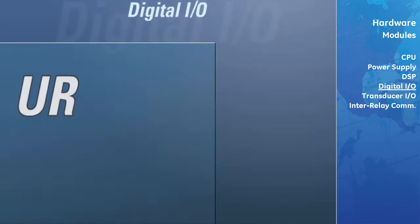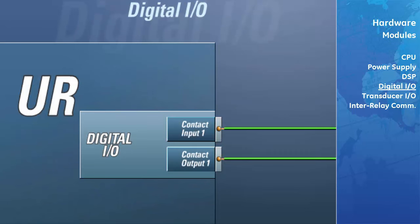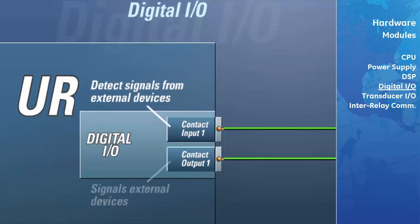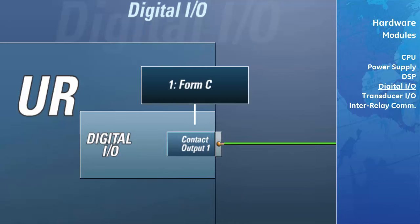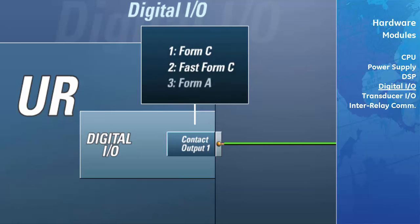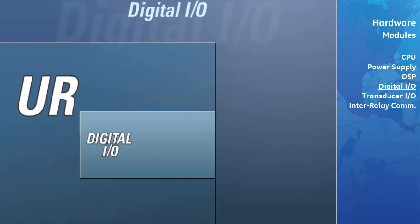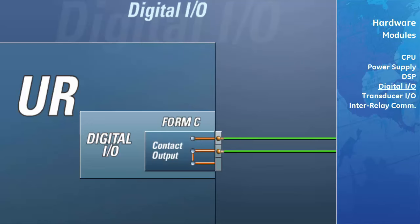The digital input-output modules are where the contact inputs and contact outputs are located in the UR. Contact inputs act as sensors to detect hardwired signals from external devices in the substation. Contact outputs are hardware switches used for signaling devices external to the UR, such as circuit breakers. There are three different types of contact outputs: Form C outputs, Fast Form C outputs, and Form A outputs with the option for voltage and current supervision. Form C contact output relays have both normally open and normally closed terminals available, can carry up to 6 amps continuously, and operate in less than 8 milliseconds.